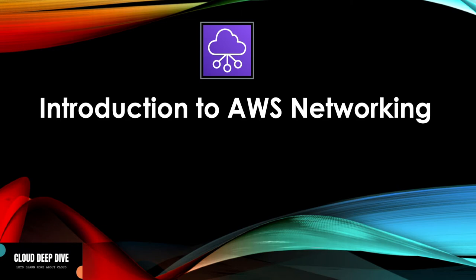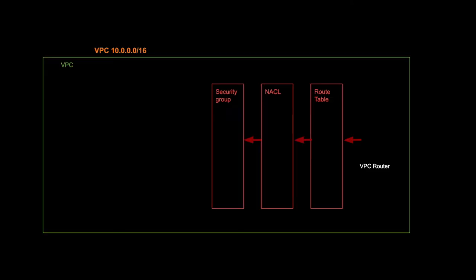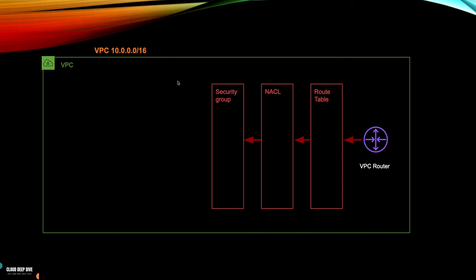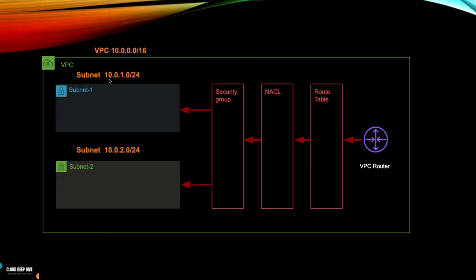In today's video we will talk about internet gateway and route table. If we look at our architecture diagram, what we have so far is we created our VPC, and by default in that VPC we got a security group, network access control list, a route table, and the router. After that we created two subnets with the IP range of 10.0.1.0/24 and 10.0.2.0/24. Today we will be creating an internet gateway.